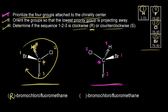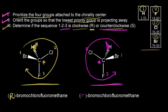Step two: point the lowest priority group away from you — that's already happening here, so step two is done. Step three: determine if the sequence one, two, three is clockwise or counterclockwise. Ignoring the lowest priority group going away from us, going around one, two, and three in a circle goes counterclockwise. So this must be the S enantiomer — S-bromochlorofluoromethane.